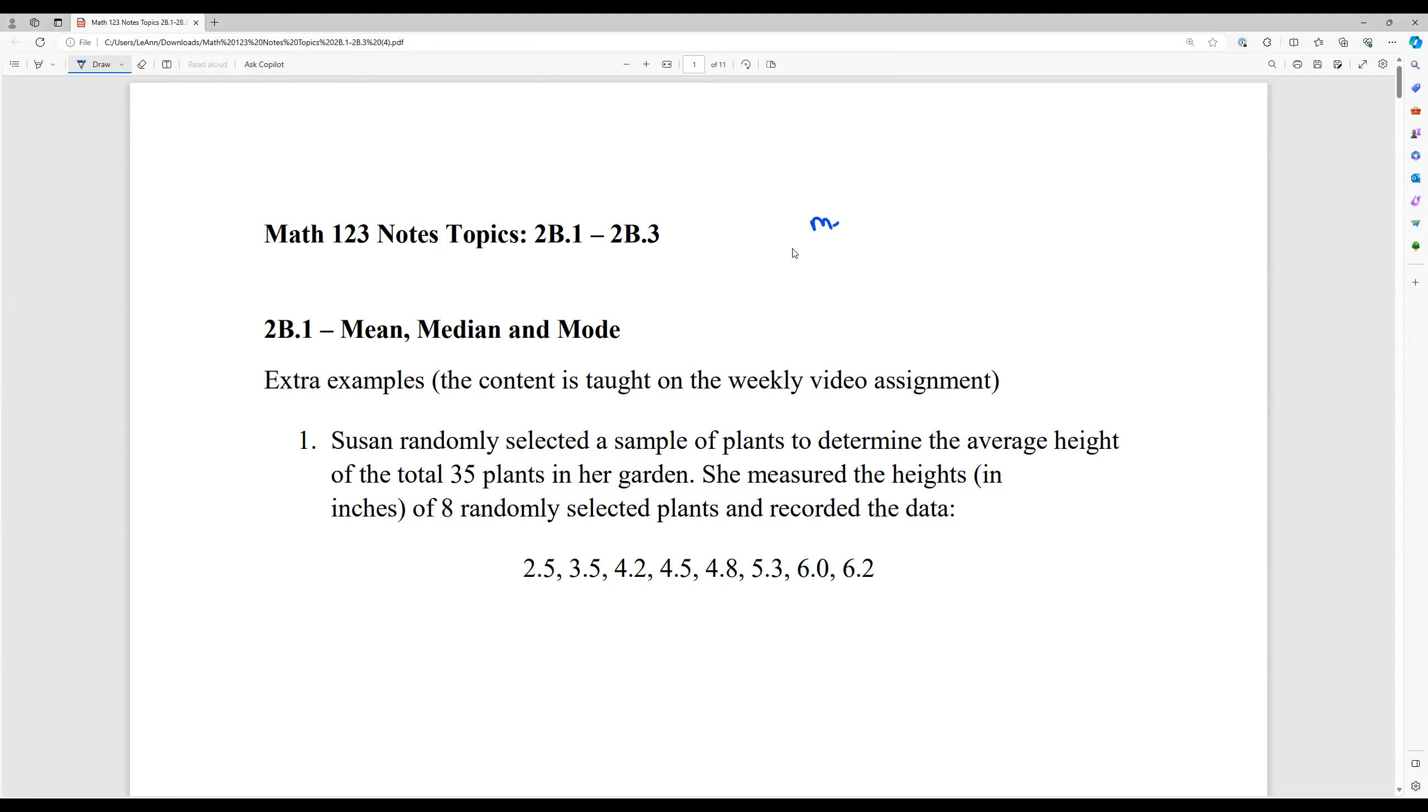So the mean of a set of data is when we add up all the items and we divide that by the total number of items. So we think of that sometimes as an average. That's another word. Sometimes people interchange for mean.